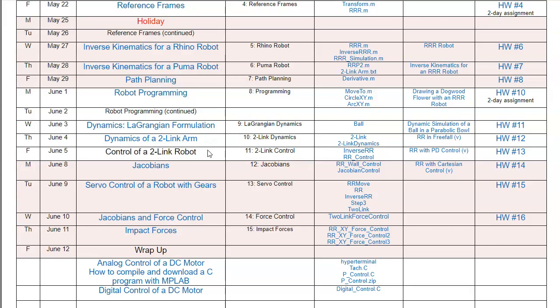We'll try to have a two-link arm trace out squares. The last week of the semester, we'll get into Jacobians — instead of trying to control it in joint coordinates, can I control it in XY coordinates, or what happens when I impact a surface?